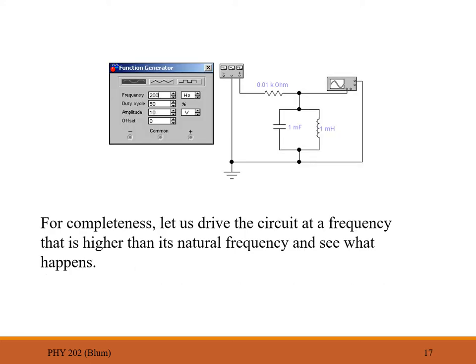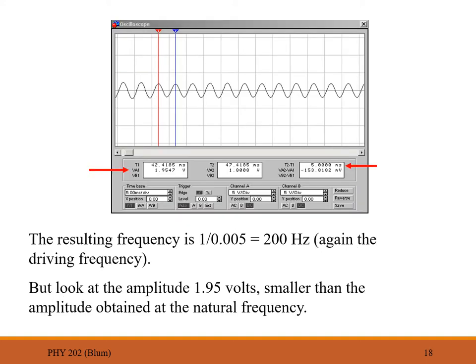Now we go above the natural frequency, setting the function generator to 200 hertz — about 50 hertz higher than the natural frequency. The oscilloscope shows a period of about 5 milliseconds, or 0.005 seconds, giving about 200 hertz. The frequency again matches the driving frequency, but the amplitude is now about 1.95 volts — smaller than at the natural frequency. The biggest amplitude occurred at the natural frequency.